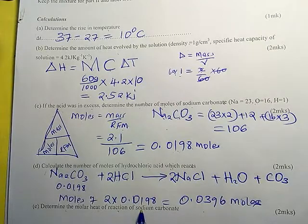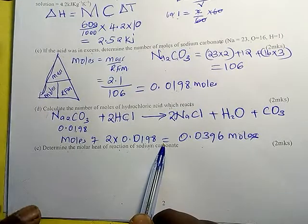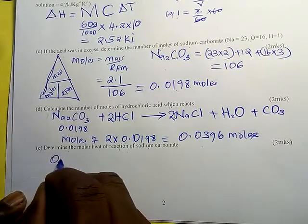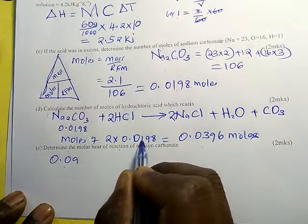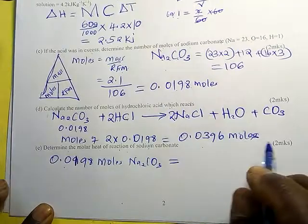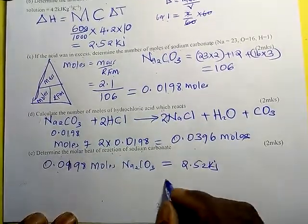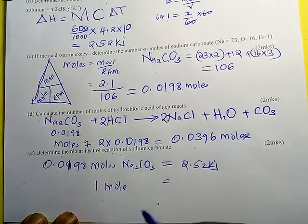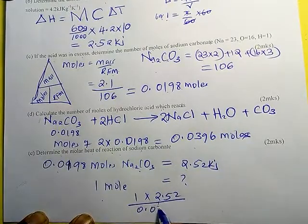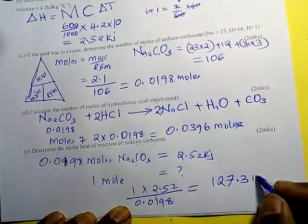Now determine the molar heat of reaction of sodium carbonate. Molar heat means we find the heat produced per one mole. We know that 0.0198 moles of sodium carbonate produced 2.52 kJ of heat. So for 1 mole: molar heat = 1 × 2.52 ÷ 0.0198 = 127.3 kJ/mol.